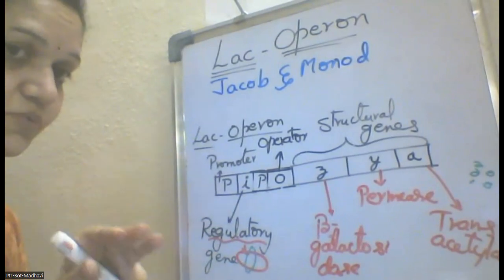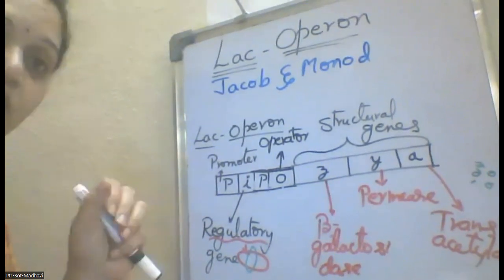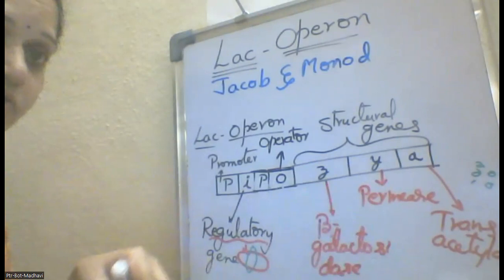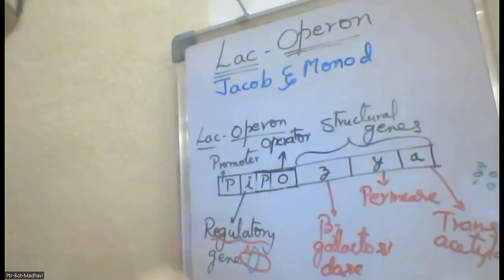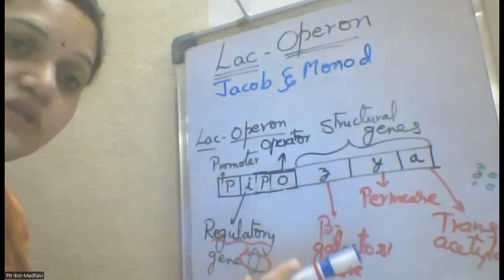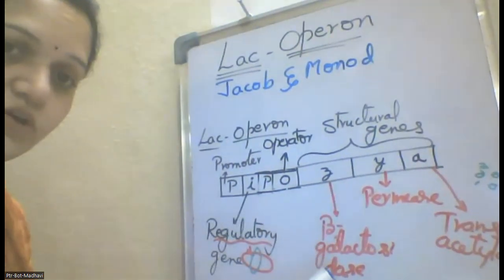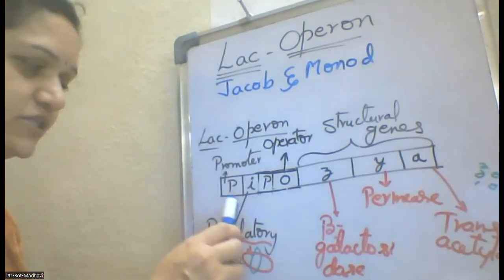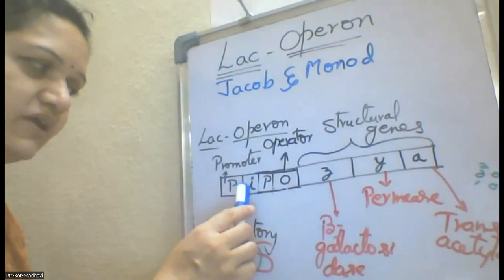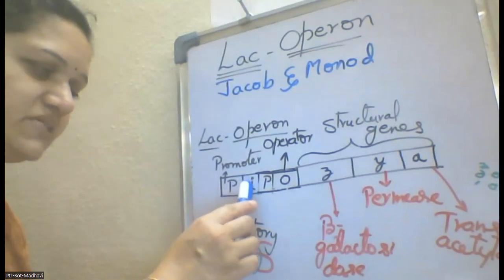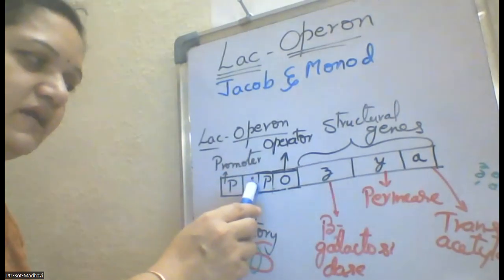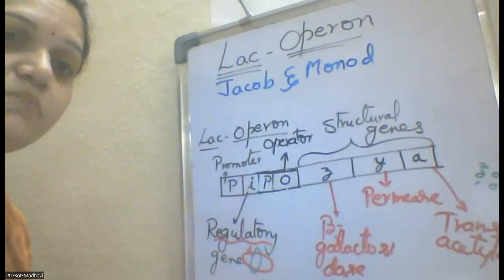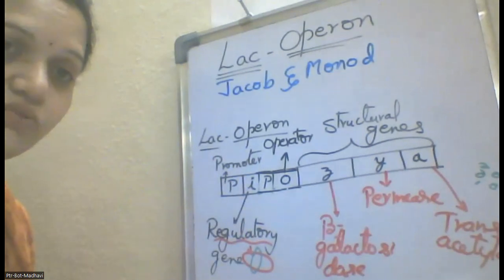Then the translation process occurs to produce the specific enzymes, and with that, the complete lactic acid molecules are utilized and the energy is given to the organism for the specific organ. In this operon gene, two promoter genes are present — one is prior to the repressor regulatory gene and the second is after the regulatory gene. These two promoter genes will make the initiation of this operon model.